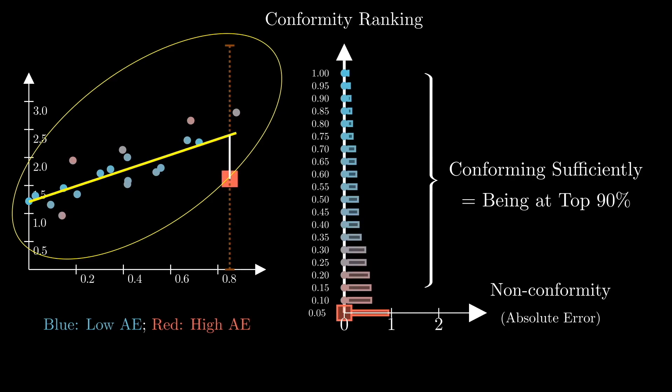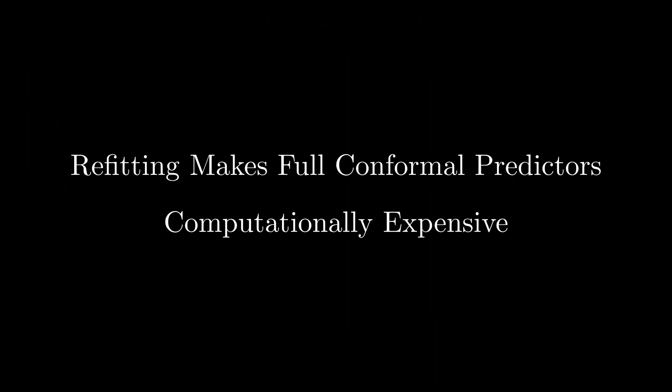The plausible values that put the square at the top 90 percent of the ladder are collected into our prediction set for the test point, the square. It should now be obvious that having to refit the model for every tried plausible value and test point is what makes these full conformal methods computationally very expensive.